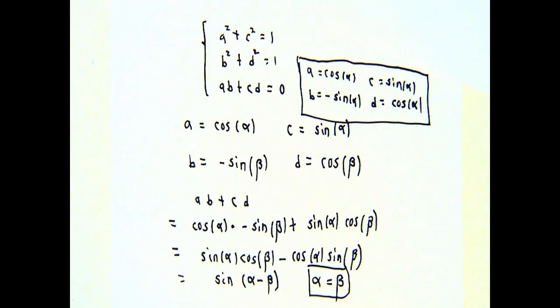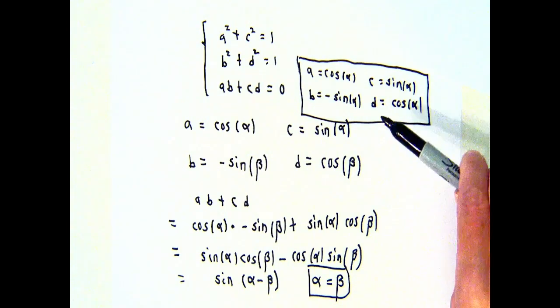So, we were hoping to get a one-parameter family of relations here, and that's what we got. The alpha is some parameter which describes the relationship between the two coordinate systems. And, in terms of alpha, we have our coefficients now.